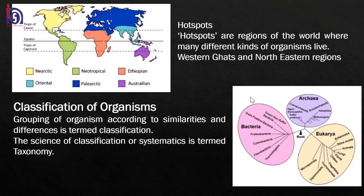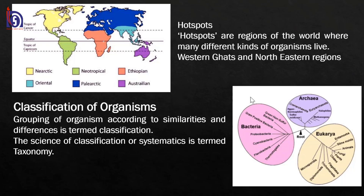The world is generally considered as six different biogeographic regions. These have been differentiated into Neotropical, Ethiopian, Oriental, Palearctic, and others. Based on the biodiversity that exists on this planet, they have been classified into six different regions. The Indian scenario comes under the Oriental region, which includes the Indo-Tibetan, Indo-Himalayan, and Indo-Gangetic platforms, all considered together as the Oriental region.